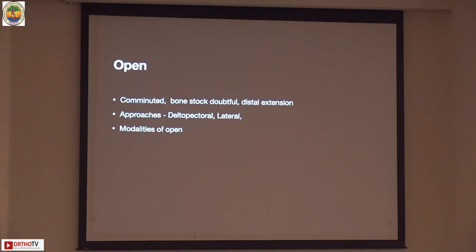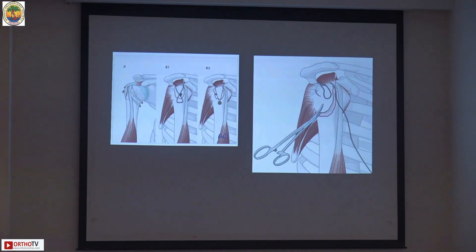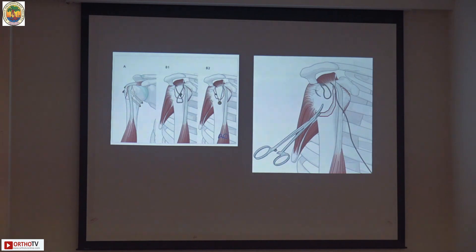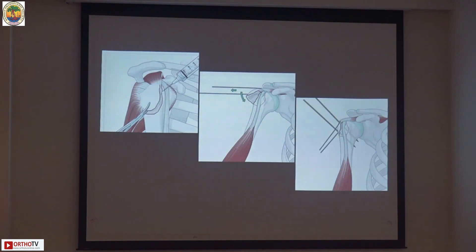For open methods — appropriate when there is a comminuted fracture, doubtful bone stock, or distal extension — approaches include deltopectoral and lateral. You can use two CC screws, a plate, a tension-band wire, or suture anchors with screw fixation. One common thread for all open methods: use the rotator cuff, as it aids reduction and tensioning. With significant comminution, it may obviate the need for additional hardware.